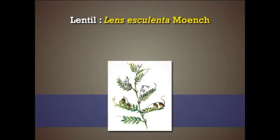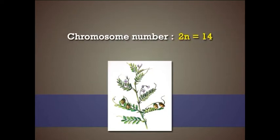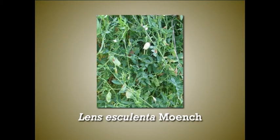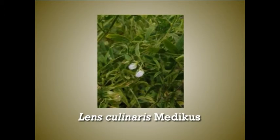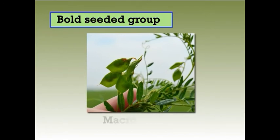Lentil, that is Lens esculenta Moench, belongs to family Leguminosae and sub-family Papilionoideae, and has a chromosome number of 2n equal to 14. There are two cultivated species of genus Lens: Lens esculenta Moench and Lens culinaris medicus. The cultivated species Lens esculenta are classified into two sub-groups according to seed size. The first one is the large-seeded group, indicating subspecies macrosperma.